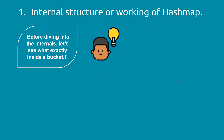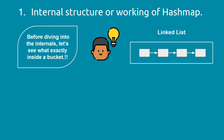Before diving into the internals, let's understand what exactly a bucket is and how data is stored in it. A bucket is nothing but a linked list. A linked list stores data in the form of nodes — one node points to the next node, which points to the next. Each node consists of two things: the data we want to store, and a pointer to the next node.